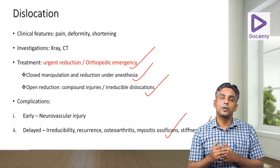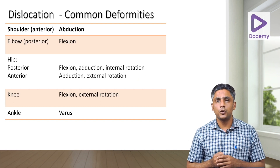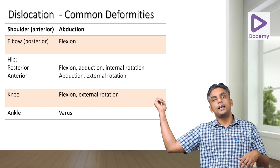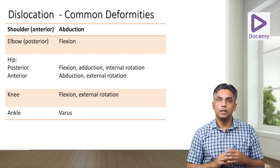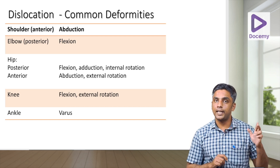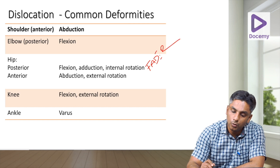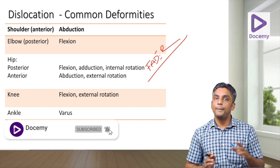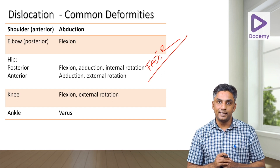Regarding classic deformities: in anterior shoulder dislocation, the patient holds the upper limb in abduction. In posterior hip dislocation, the classical deformity is FADIR — Flexion, ADduction, and Internal Rotation — a common exam question. These are the basic science topics in bone injuries covering Salter-Harris classification, stress fractures, and dislocations.